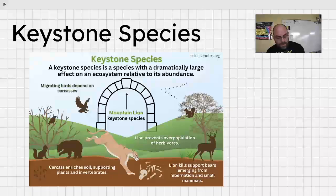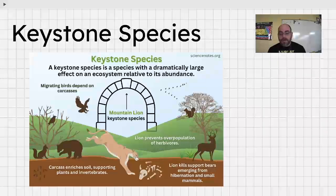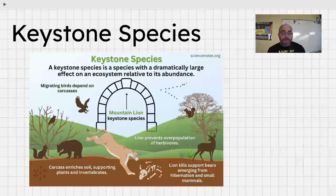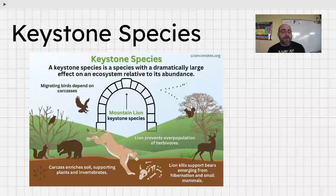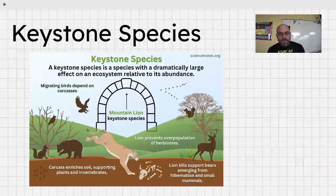A keystone species is like the keystone in an arch — it's the stone that keeps the rest of the arch together. In ecology, a keystone species is one that, if removed, would have a dramatic effect on the whole ecosystem because of its influence on the species it preys upon and the predator populations it helps keep in check. Every ecosystem has a different one. Sea otters are a great example — they hold the balance of their ecosystem together.